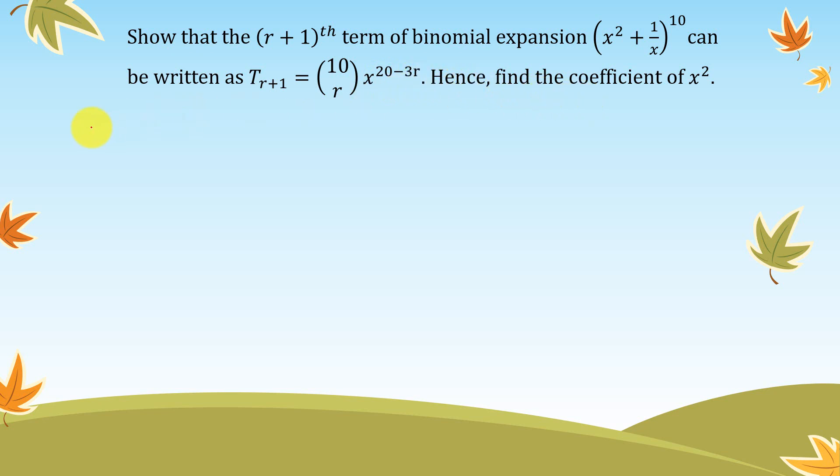So firstly, let us use the formula for T_{r+1}. This is (n choose r) a^(n-r) b^r. Our n over here is 10, so this is our n.